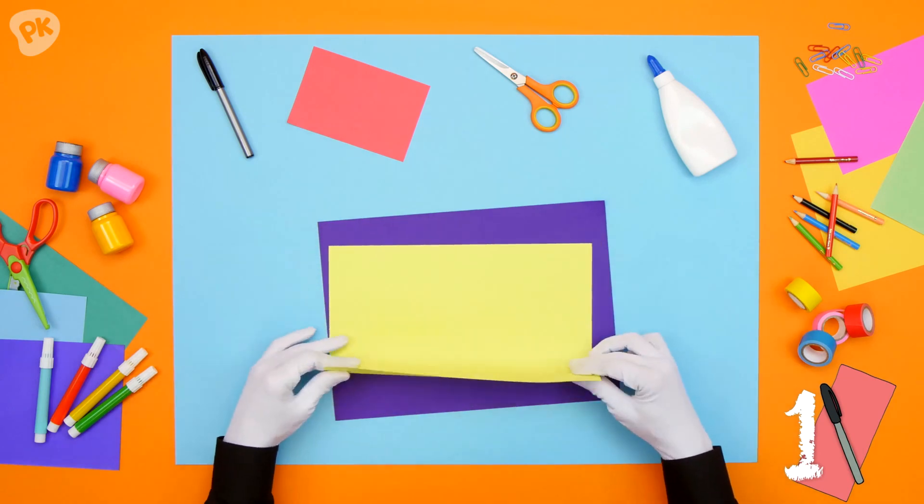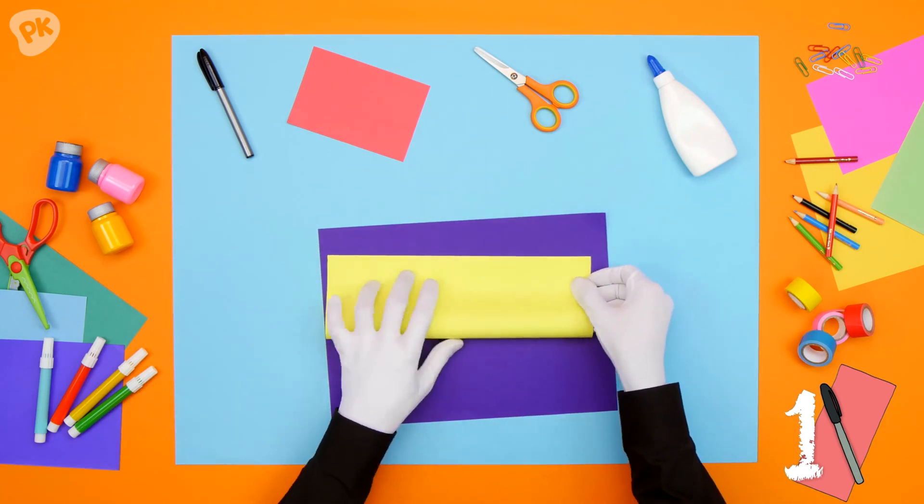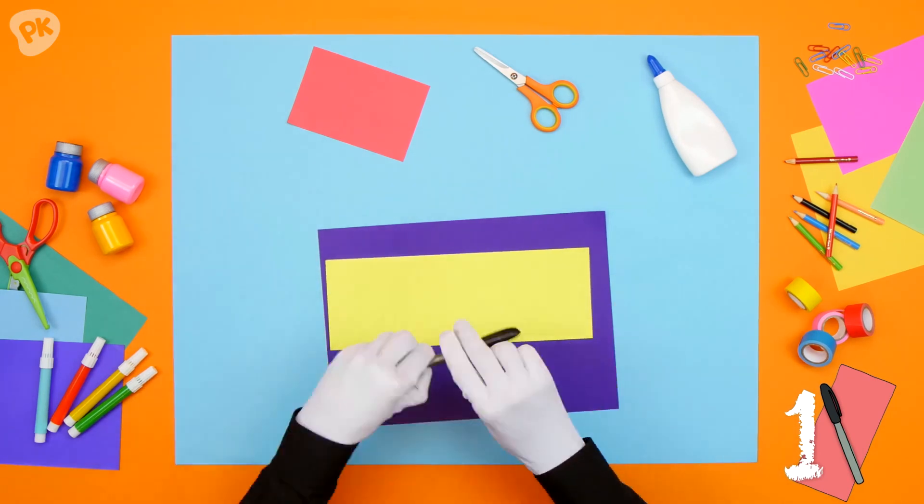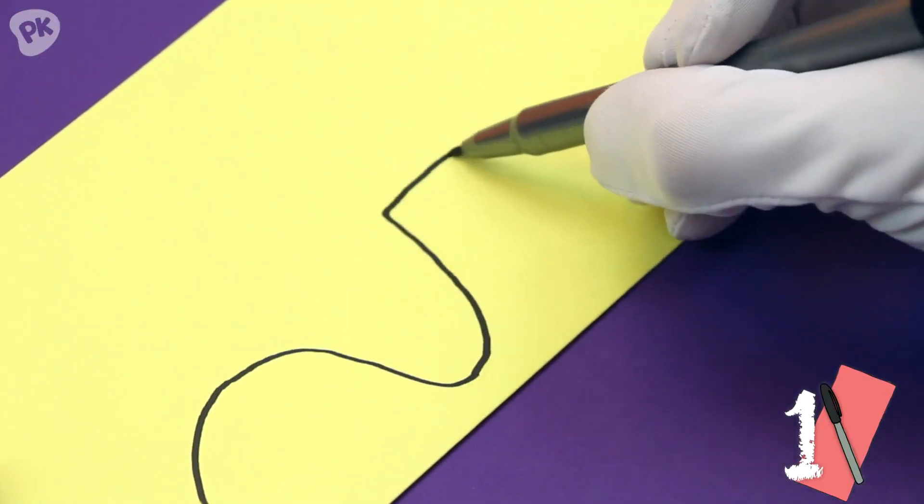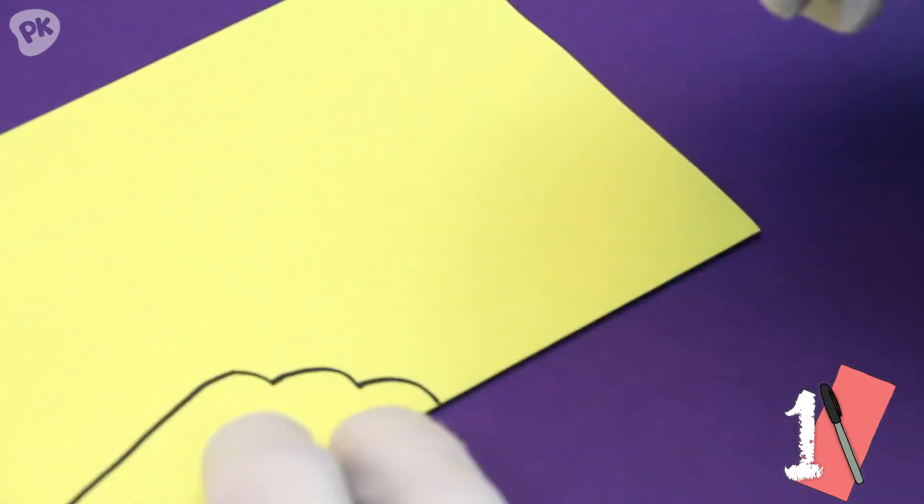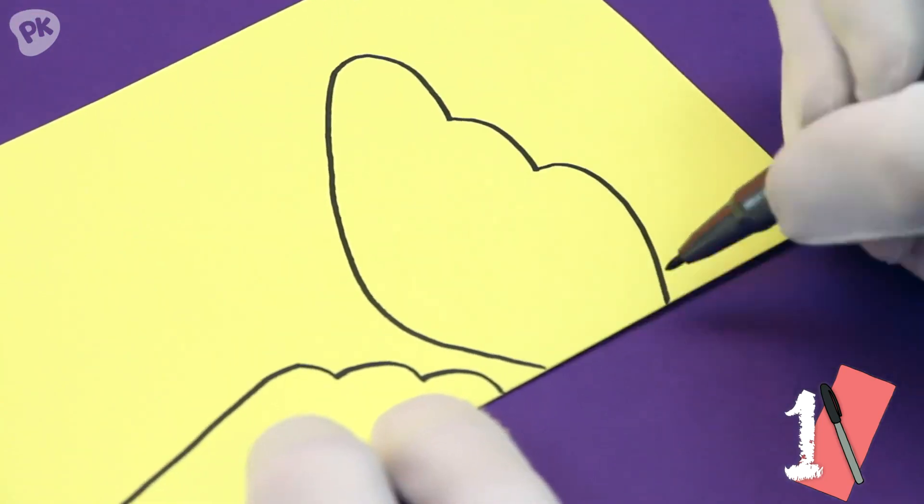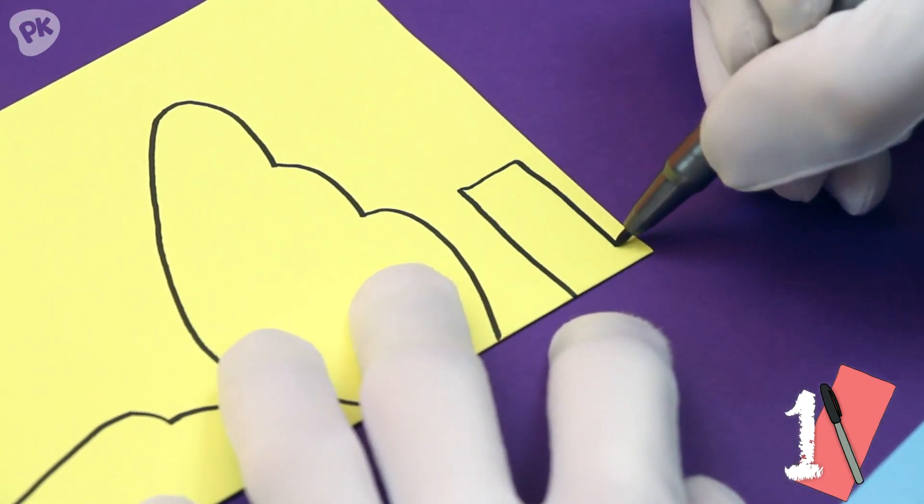Get the colored paper and fold it in half. Then with the colored pen, draw one side of the bird's body with a strip in the middle to wrap around our finger. Make sure you leave space for the bird's wing and another strip of paper that we'll use to put on our finger.